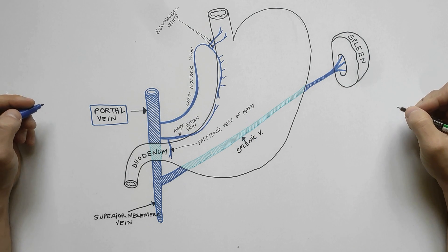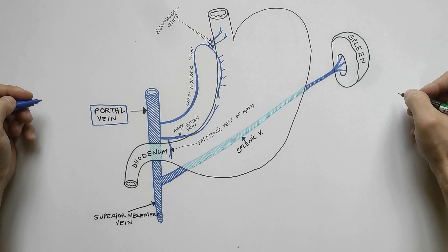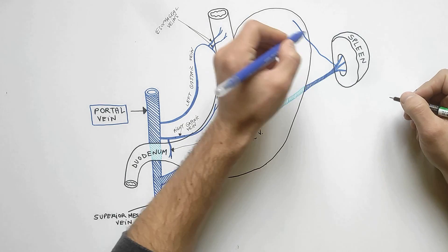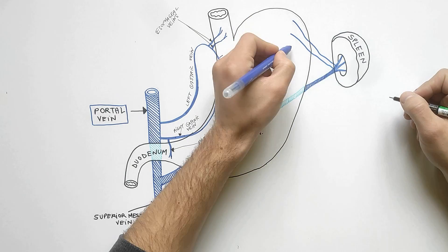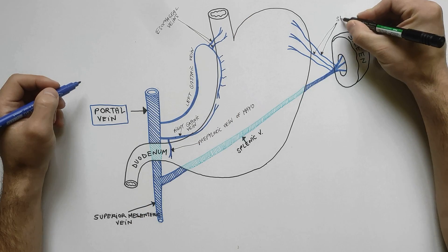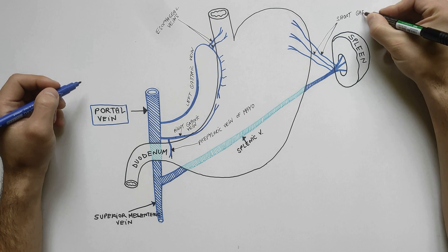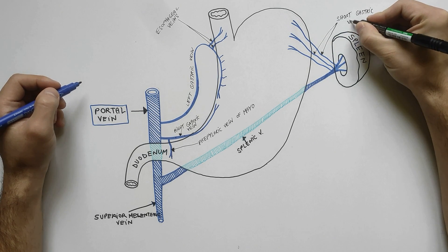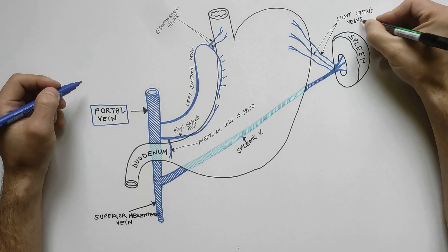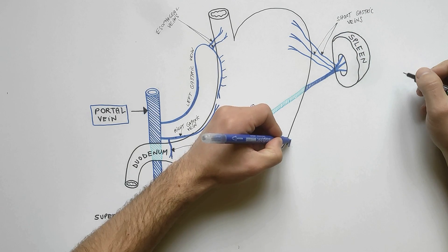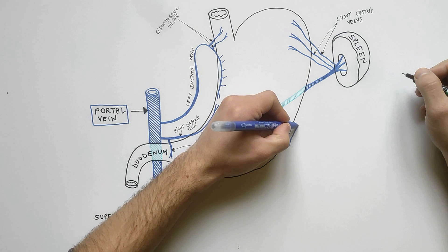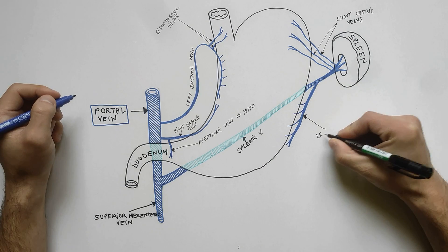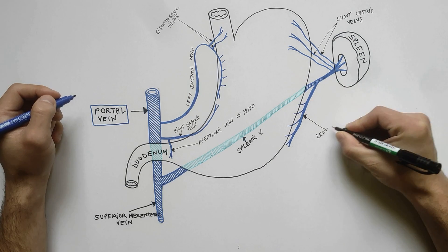From the fundus of the stomach, the short gastric veins drain blood into the commencement of the splenic vein. Also draining into the splenic vein is the left gastroepiploic vein, which runs from right to left along the greater curvature of the stomach.